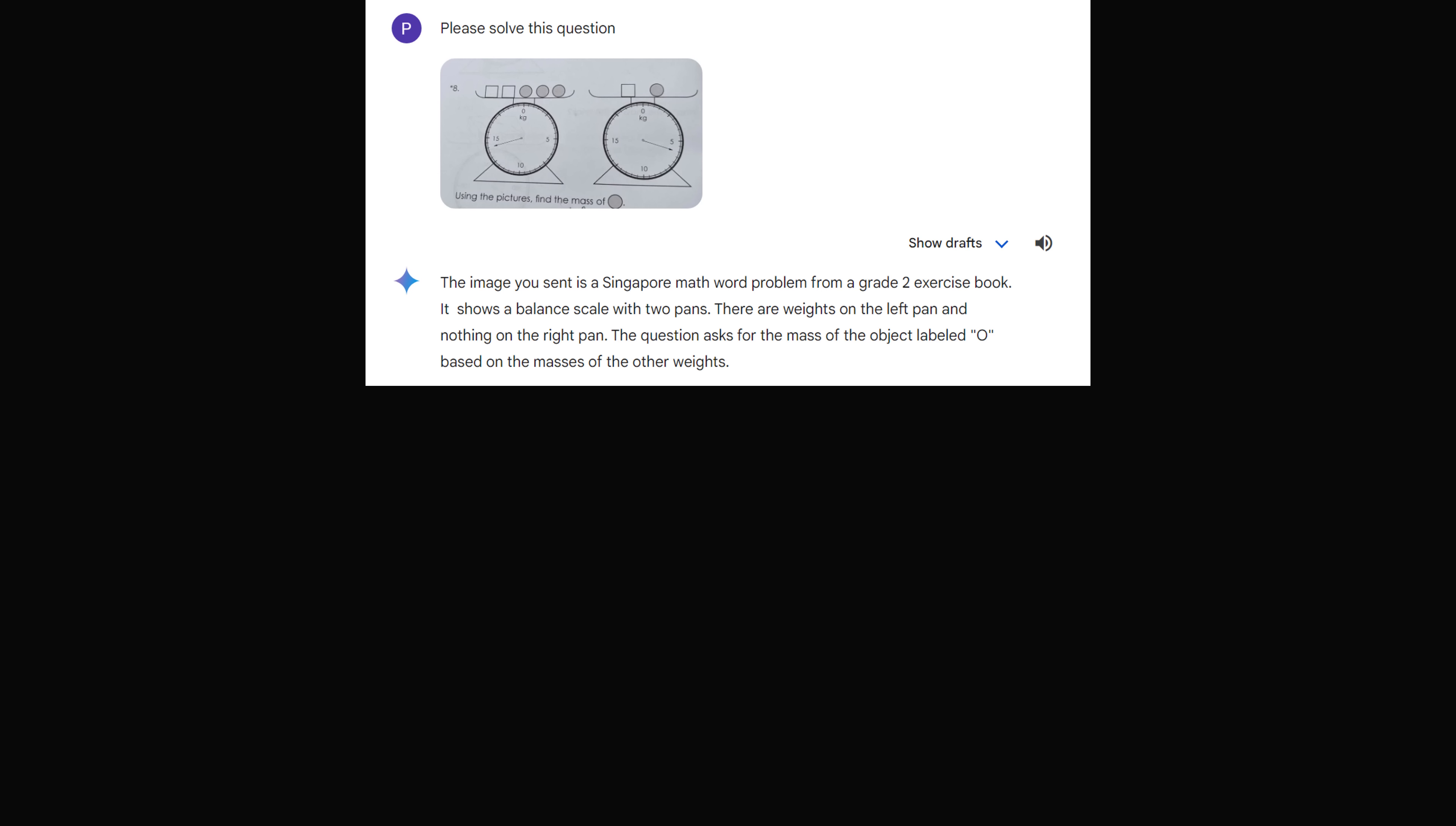So the AI tool did provide some useful information that it was a Singapore math word problem, and it was from a grade 2 exercise book. So you would know the age range and the kind of tools you would need to solve this problem. Unfortunately,